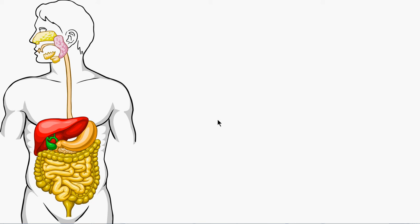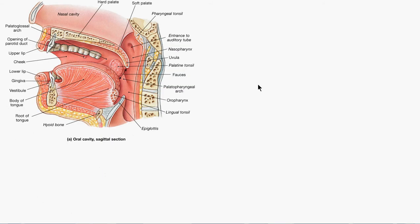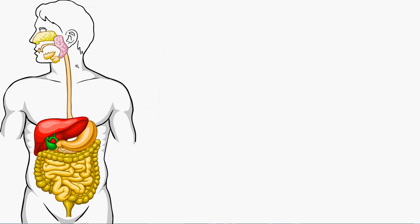Hi, this is Dr. Saad Khan and we are here with the second video of the series on the human digestive system. We'll start from where we left off. This is the oral cavity, and here we can also see the pharynx and the upper part of the esophagus — the food tube. When we swallow, the tongue pushes the food from the pharynx into the esophagus.